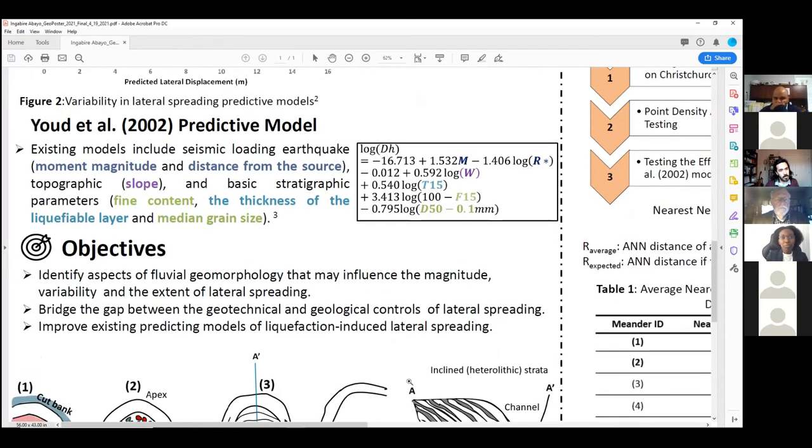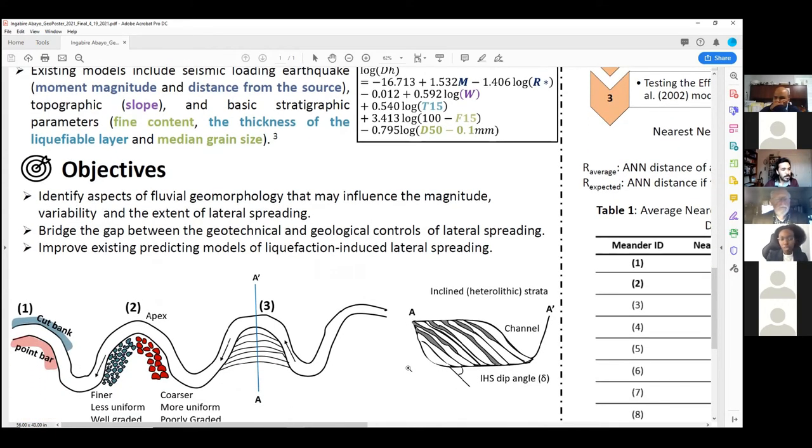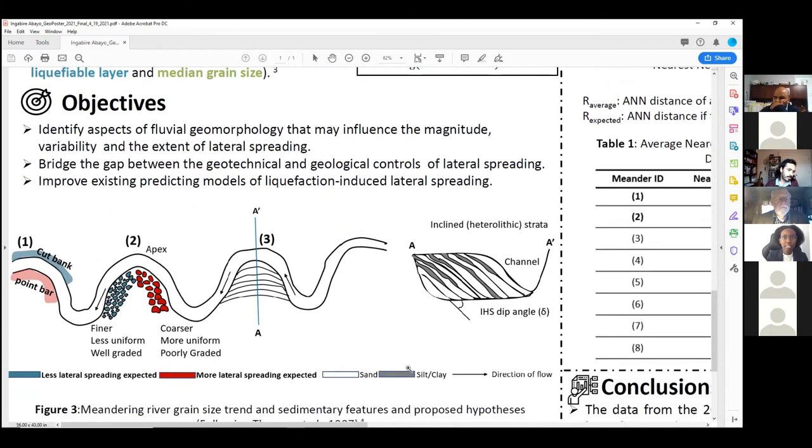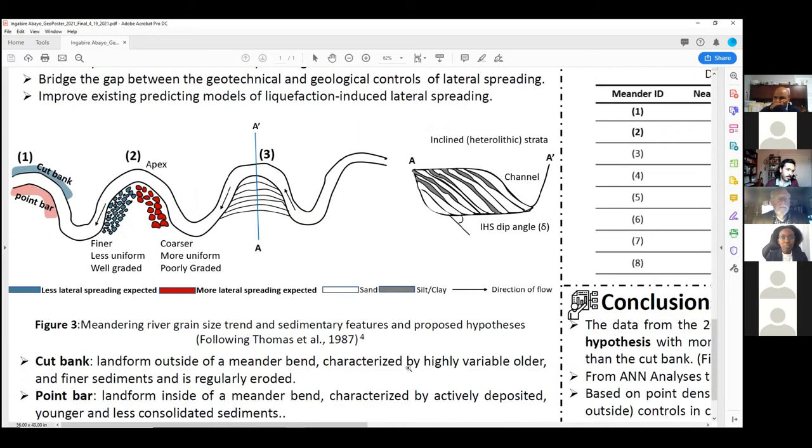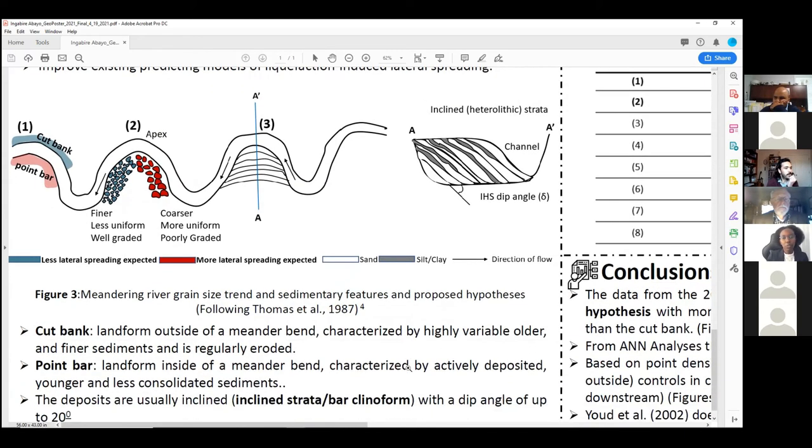Since lateral spreading has been repeatedly observed near rivers, we started by analyzing the features of a meandering river, especially since our case study is Christchurch, New Zealand. I will highlight some of these features and also share some of the proposed hypotheses, and at the same time, the simple geomorphic facies models and grain size trend on which they're based.